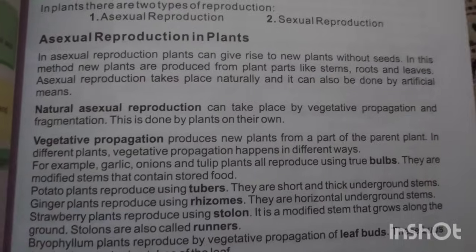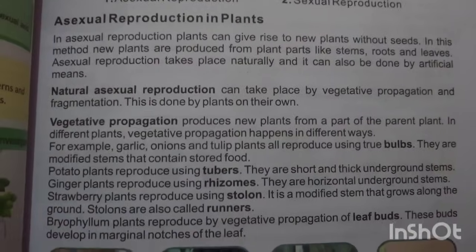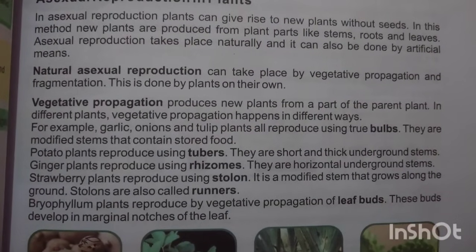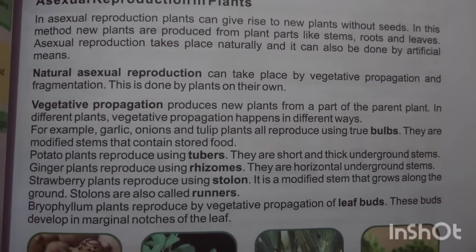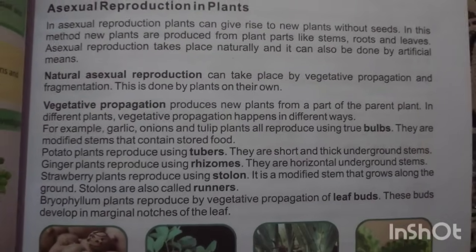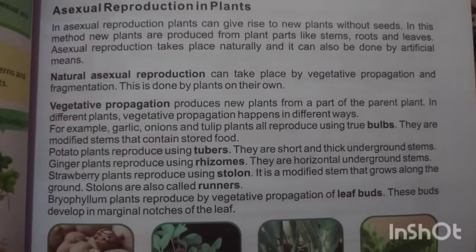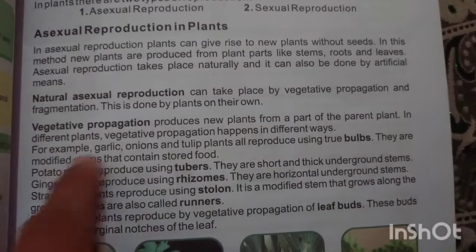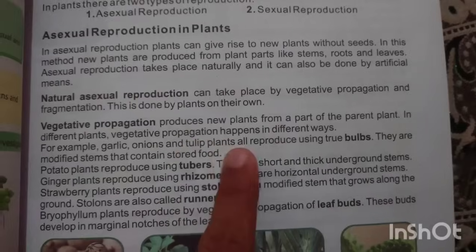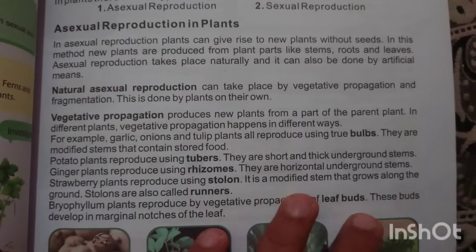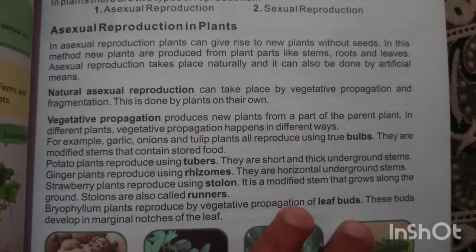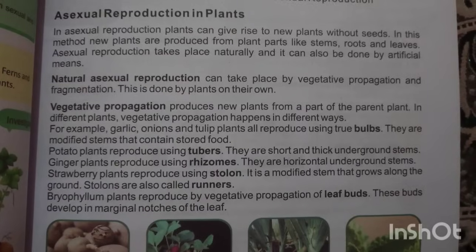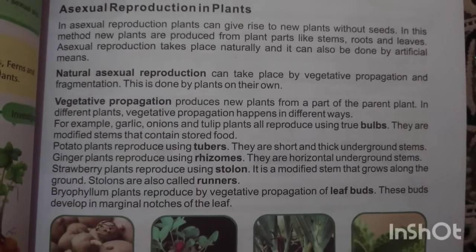Vegetative propagation produces a new plant from a part of the parent plant. In different plants, vegetative propagation happens in different ways. For example, garlic, onion, and tulip plants reproduce using bulbs — they are modified stems that contain stored food.